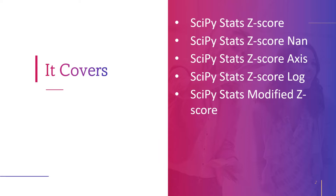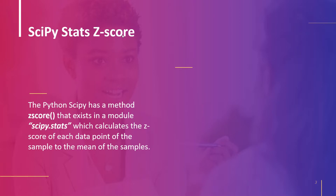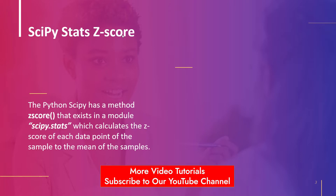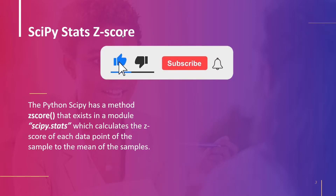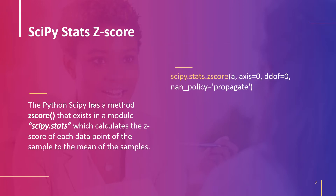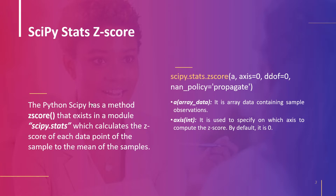Now moving to the first topic: Python scipy stats z-score. In the scipy stats module of the Python library scipy, there is a method called z-score that computes the z-score of each data point in a sample relative to the sample mean. It finds the distance of each observation from the sample mean using standard deviation. The syntax is scipy.stats.zscore, where the parameter 'a' is an array-like object containing the sample data. The 'axis' parameter defines along which axis to compute the z-score — by default it is 0. If it is None, it computes over the whole array.